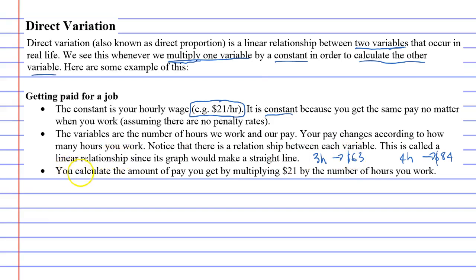You calculate the amount of pay you get by multiplying $21 by the number of hours you work. So if we look at it, the number of hours you work is called a variable because it varies from week to week. You multiply that by your constant, $21 an hour. And after you do that, you get your total pay, which is another variable.